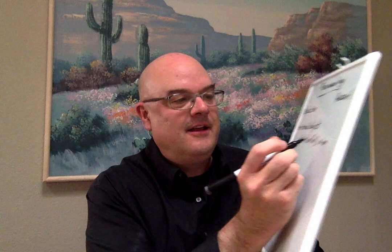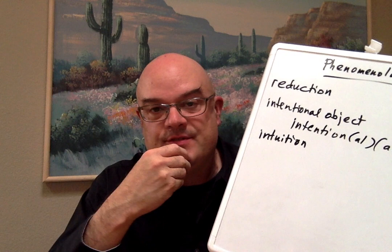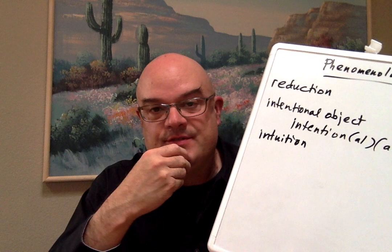Intentions are particular and relative to particular objects, and it's only in having a certain sort of intention in this technical phenomenological sense that an object is able to show up for me as the type of object it is. So these are very closely related concepts — the intention or the intentional aim. Next is the idea of an intuition. In the phenomenological sense derived from Husserl, the idea of an intuition is primarily understood as the fulfillment of an intention — the filling of an intention, you might say.